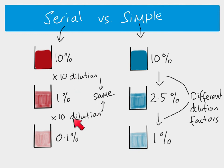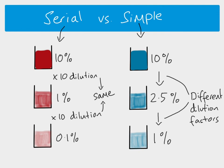With a serial dilution, each step has the same dilution factor — it doesn't have to be times 10, that's just the example, but if the first step is times 10 then every subsequent step must also be times 10. With a simple dilution, you have a different dilution factor each time, and how you make these dilutions is different.